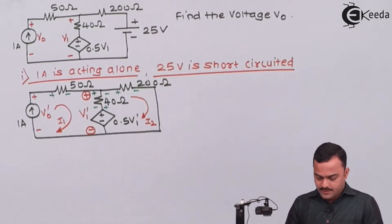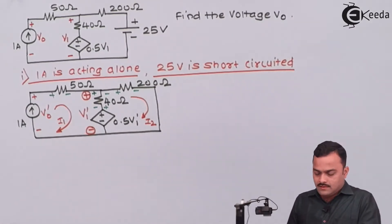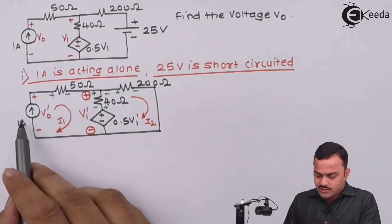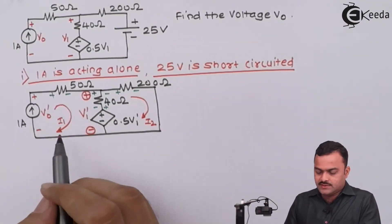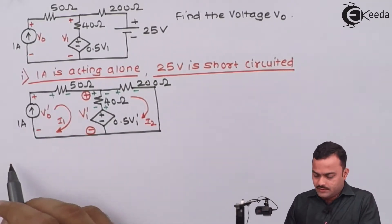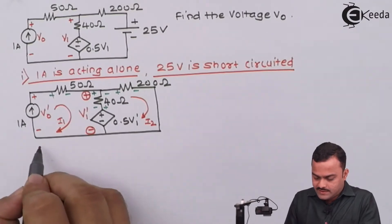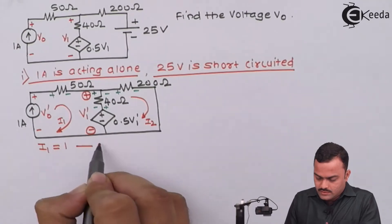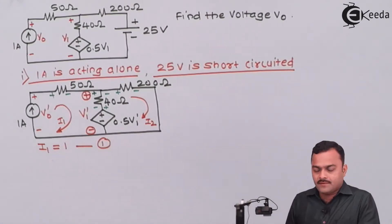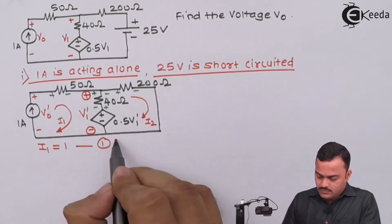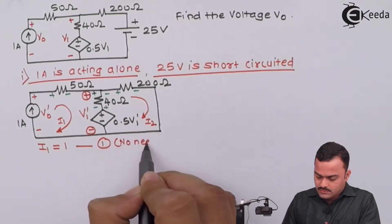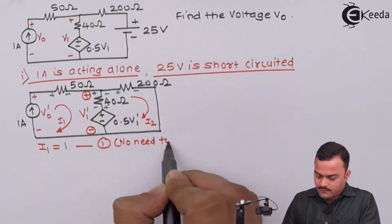Now we are ready to apply KVL. No need to apply KVL to mesh 1 because the current source is present, so our work will be reduced. I can directly say i1 = 1 — equation number 1 — straight away, no need to apply KVL.